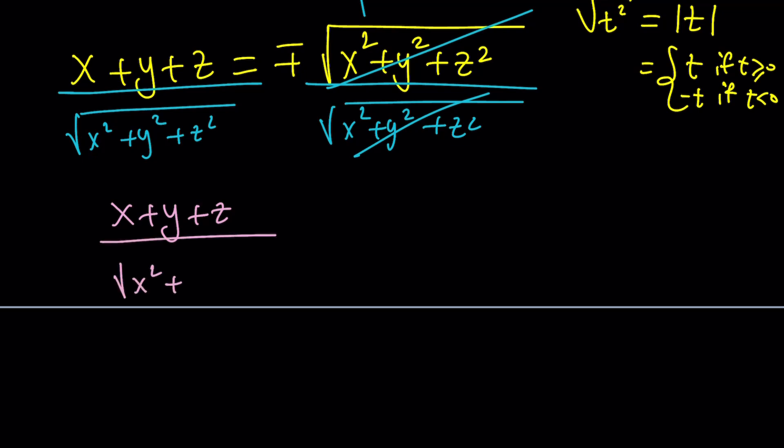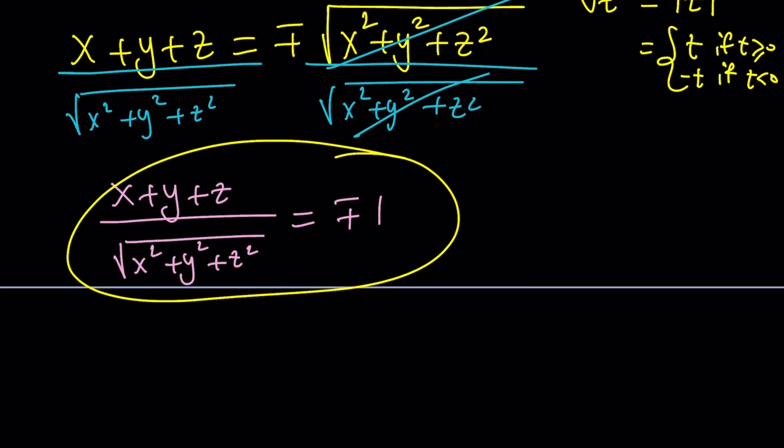What does that mean, though? Well, depending on the values of x, y, z, the answer can be 1 or negative 1. That's pretty much the first method. We worked it algebraically until we got the answer.